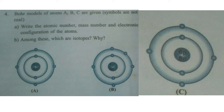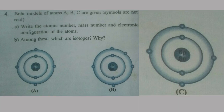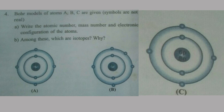Let's look at the isotopes. The first element has Z equal to 6, and A equals protons plus neutrons: 6 plus 6 equals 12. Electronic configuration is K2, L4. The second element has Z equal to 7, mass number equals 7 plus 8 equals 15, and electronic configuration is 2, 5. The third element has Z equal to 6, A equals 6 plus 8 equals 14, and electronic configuration is 2, 4. The answer is atoms A and C, because they have the same Z value — same atomic number — but different mass numbers. That is the definition of isotopes.